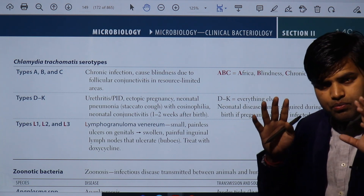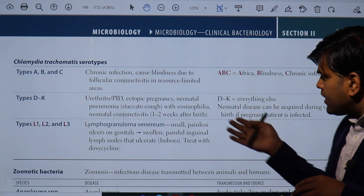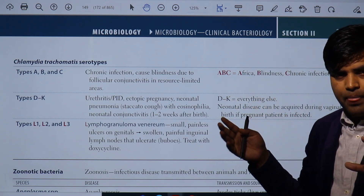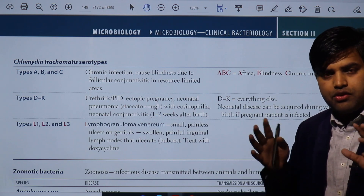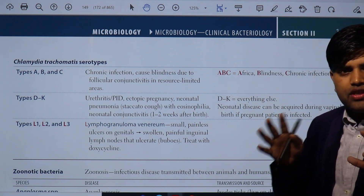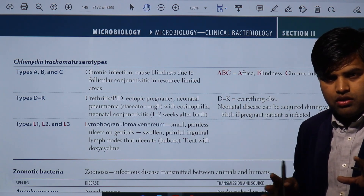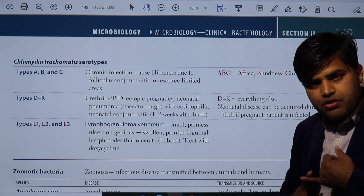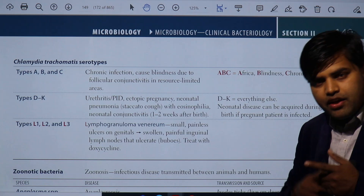Since chlamydia is an intracellular bug, we cannot use beta-lactam antibiotics. They are difficult to treat. However, they can be effectively treated with azithromycin and doxycycline, which are the drugs of choice. Because they have reduced peptidoglycan in their cell wall — specifically lacking muramic acid — beta-lactam antibiotics do not work. We know the organism is an obligate intracellular organism causing a wide range of disease.